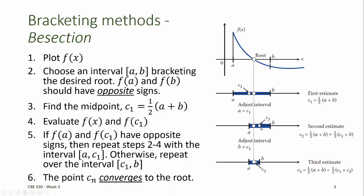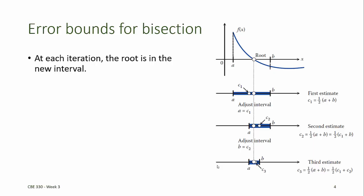The midpoint of the new interval will be called c2. That's our second estimate for the root of the function f of x. As we repeat this procedure, the interval containing the root gets cut in half at each step. And as n becomes large, the midpoint of our shrinking interval converges to the root.